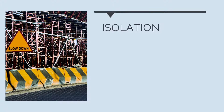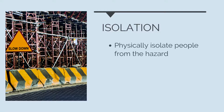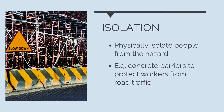Next, we can isolate the hazard. This means physically isolating people from the hazard rather than completely eliminating or substituting it. An example of an isolation control could be the use of concrete barriers to protect construction workers where works are taking place next to a live road. The concrete barriers isolate the workers and reduce the risk of being struck by oncoming traffic.